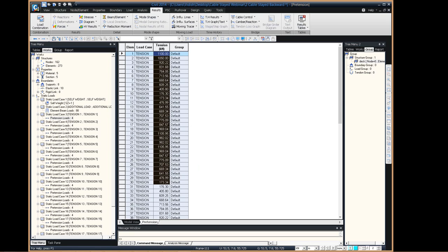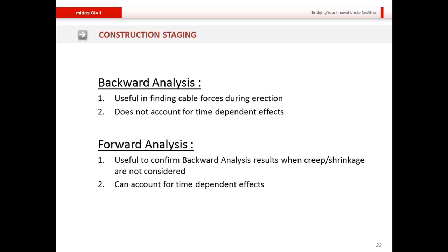Now, coming to construction staging. For cable-stayed bridges, there are normally two kinds of construction stage analyses. First is the backward analysis, used to find cable forces during erection — this does not account for time-dependent effects. Second is the forward analysis, used to confirm backward analysis results when creep and shrinkage are not considered, and it can also account for time-dependent effects.